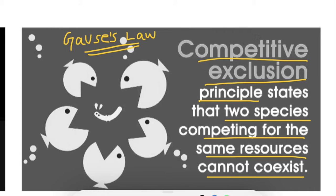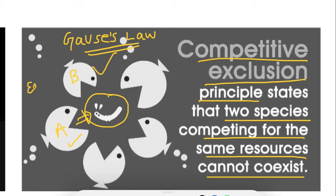For example, species A is a big fish and species B is a smaller one. Both are competing for the same resources. The strongest one will consume all the resources without leaving anything for the weaker one. The weaker one will either go extinct or may evolve new characteristics in order to survive — it gets excluded from the competition.